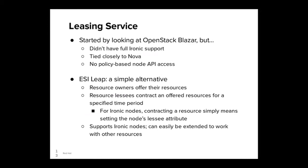Finally, the leasing service. We started by looking at OpenStack Blazar, which is OpenStack's reservation service. However, at the time, Blazar did not have full support for provisioning on Ironic nodes. It was also tied closely to Nova, something we were trying to avoid, as Ironic can provision nodes on its own and we wanted as simple a service architecture as possible. Blazar also did not support policy-based node API access — you might be able to provision an Ironic node, but you couldn't allow a lessee to power cycle the node. So last summer, with the help of a bunch of Red Hat interns — some of whom are now full-time Red Hat engineers working on ESI — we developed ESI-LEAP, which is a simple alternative. It allows resource owners to offer their resources and resource lessees to contract an offered resource for a specified time period. For Ironic nodes, contracting a node just means setting the node's lessee attribute. ESI-LEAP supports the leasing of Ironic nodes, but can easily be extended to work with other resources.